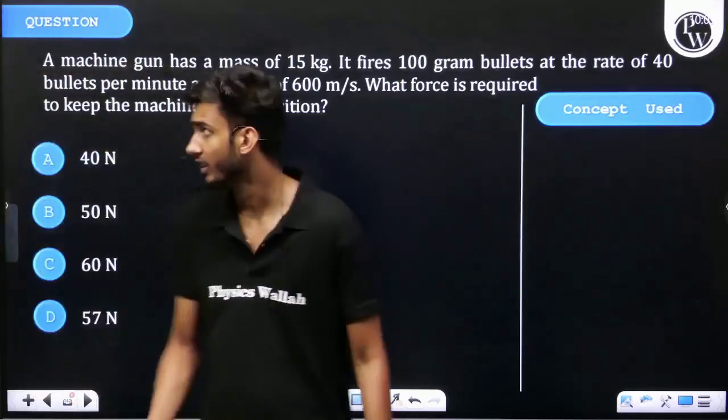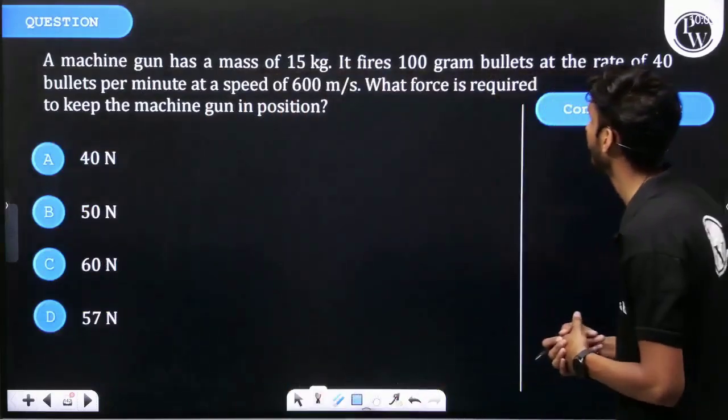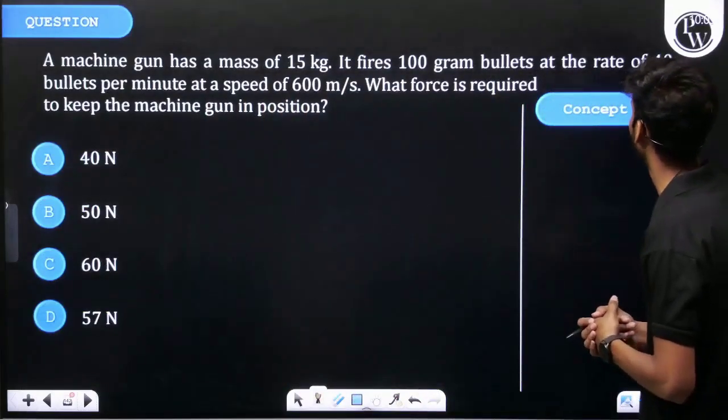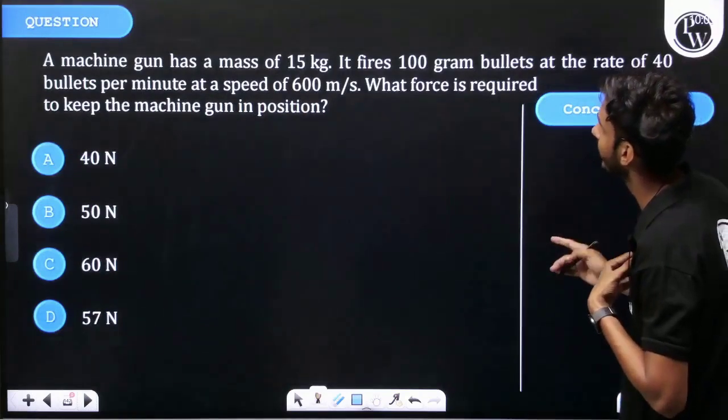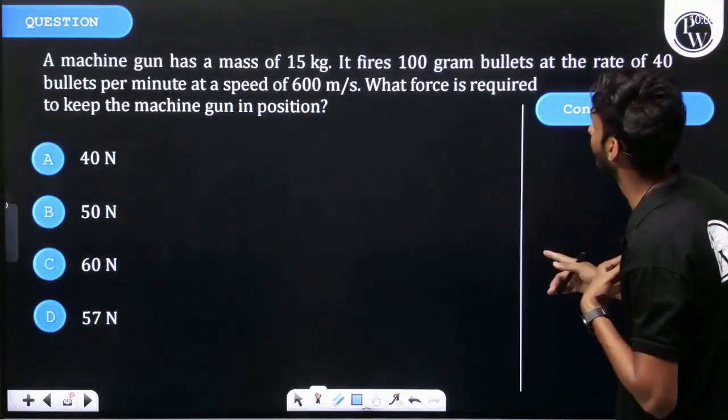Okay, let's see the question. A machine gun has a mass of 15 kg. It fires 100 gram bullets at the rate of 40 bullets per minute at the speed of 600 meters per second. What is the force required to keep the machine gun in position?